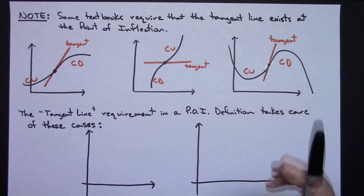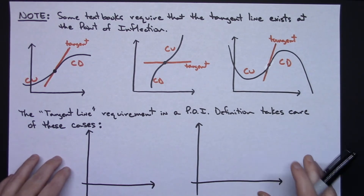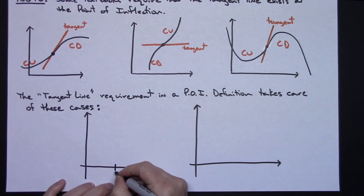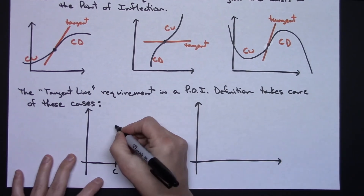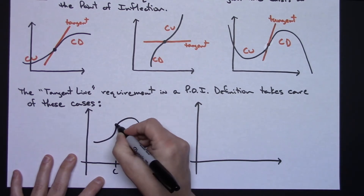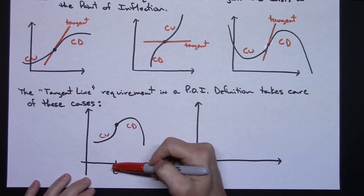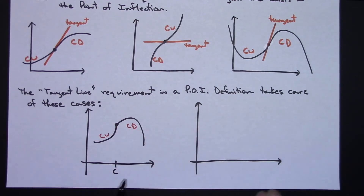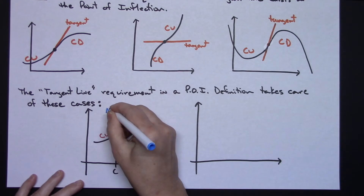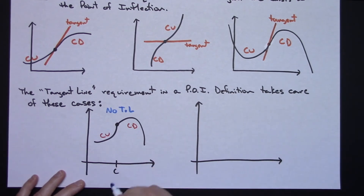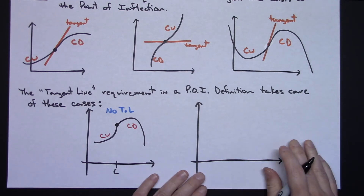The tangent line requirement in that point of inflection definition takes care of a couple particular scenarios. Suppose we've got some point c on our curve and the graph has a distinct little cusp going on there. I've got concave up here and concave down here, but right there I have no tangent line — I can't draw a tangent line at that cusp. No tangent line means no point of inflection, so c is not a point of inflection.